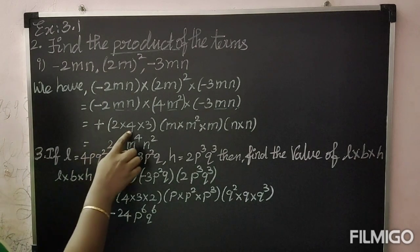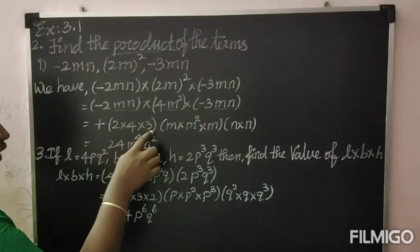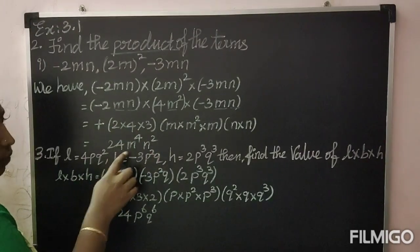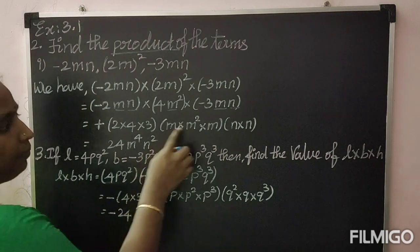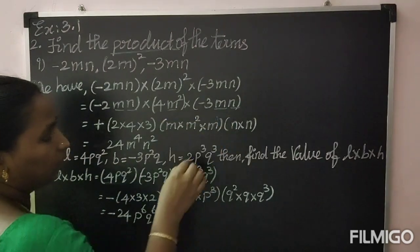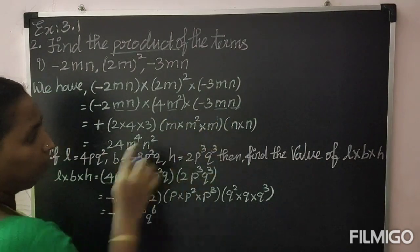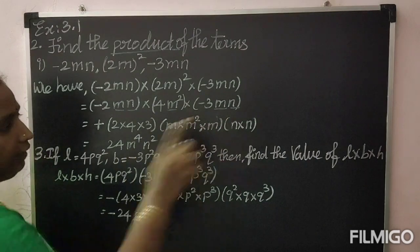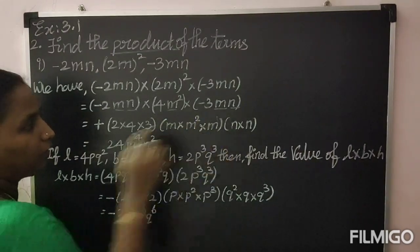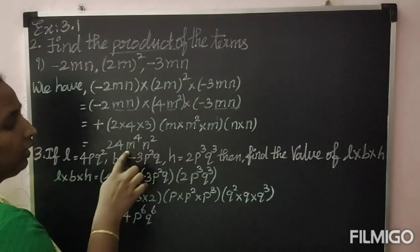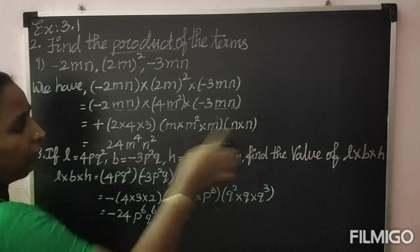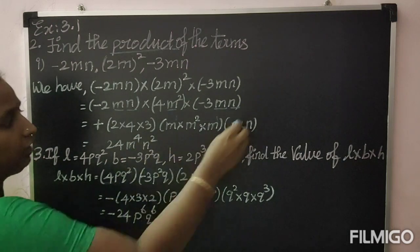So 2 fours are 8, 3 eights are 24. For m into m squared into m: m power 1 plus 2 plus 1 — bases are same, we add the powers — you will get m power 4. n into n gives n squared, that is power 1 plus 1 equals 2.